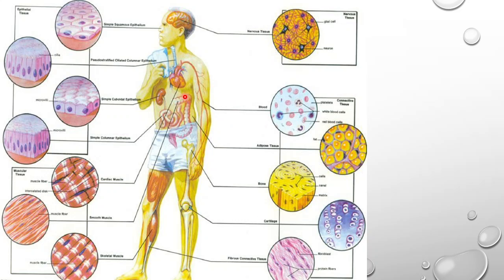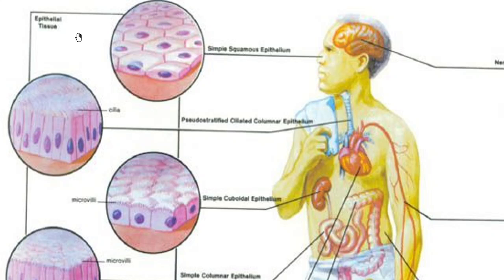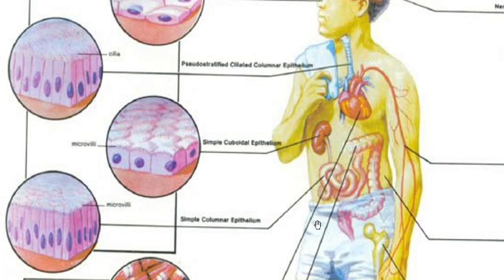To conclude, these are the different types of tissues and their locations in different regions of our body: simple squamous epithelium, pseudo-stratified ciliated columnar epithelium found in the respiratory system, simple squamous epithelium found in the alveoli, simple cuboidal epithelium found in the nephrons, and simple columnar epithelium found in the intestine — all previously discussed.